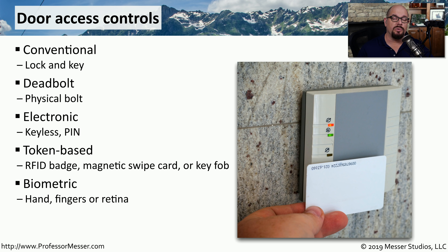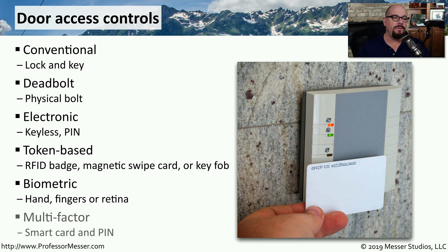Some organizations will employ biometric readers, so they can check a fingerprint or a handprint to determine if you should gain access to a particular area. Very often, these access controls are combined together — you may be using a fingerprint with a PIN number in what we call multi-factor authentication, so that it's not just one method that gains you access to a room, but a combination of different methods working together.